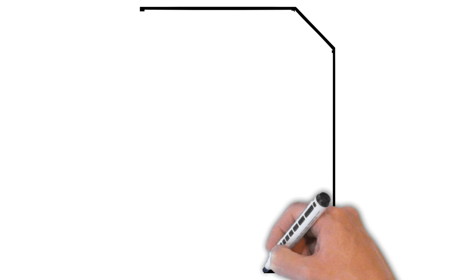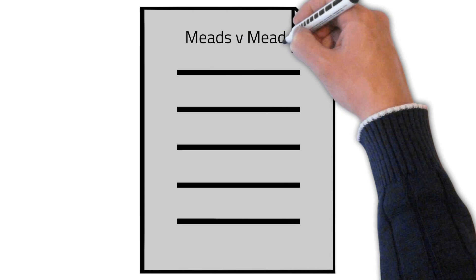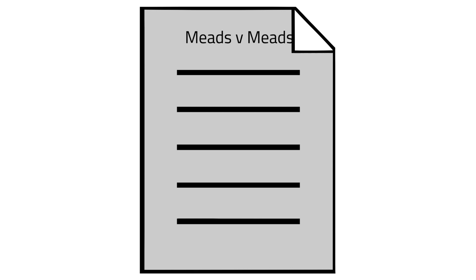At further issue, Meads vs. Meads provides 736 paragraphs of examples of OPCA litigant arguments to use as examples against a litigant through applications of syllogism.